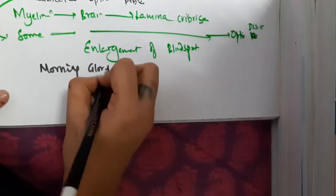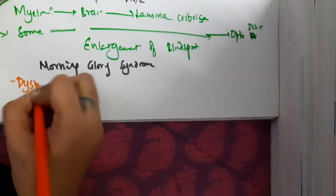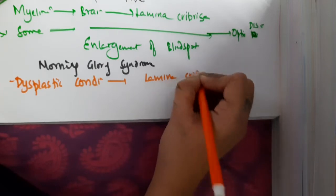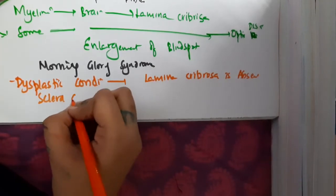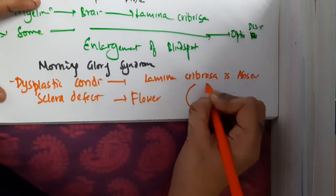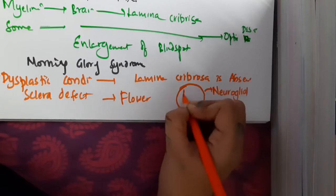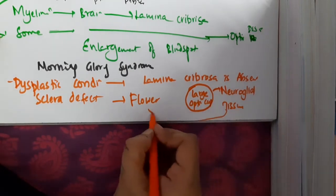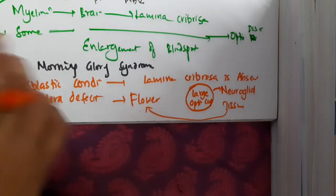The last anomaly in this topic is morning glory syndrome. This is a dysplastic condition where the lamina cribrosa itself is absent, resulting in a scleral defect. There is a large optic cup surrounded by neuroglial tissue, which resembles the flower of morning glory — the neuroglial tissue looks like the petals and the large optic cup forms the central part.